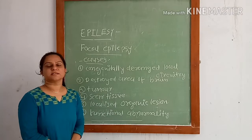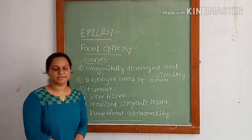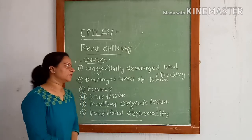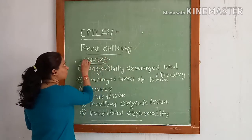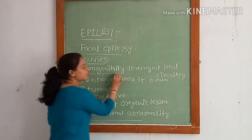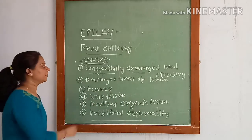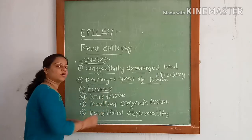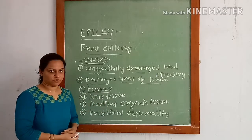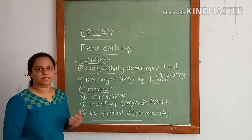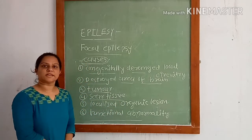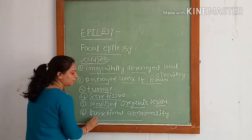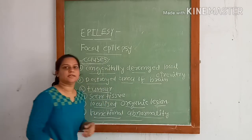In simple partial seizures, there is no loss of consciousness. In complex partial seizures, the conscious state is altered. Causes of focal epilepsy include a congenitally defective local circuit, a destroyed area of brain, a tumor of the brain compressing other structures, scar tissue in the brain pulling adjacent neuronal tissue, localized ischemic lesions, and functional abnormality of the brain.